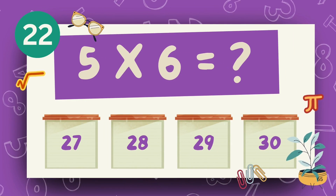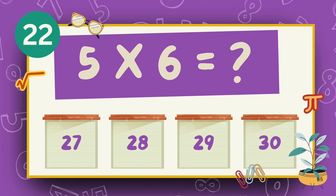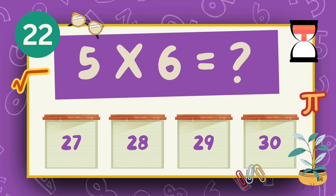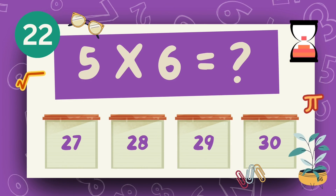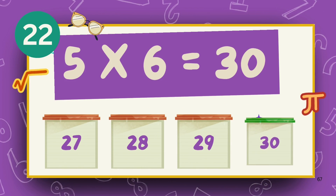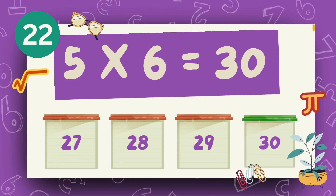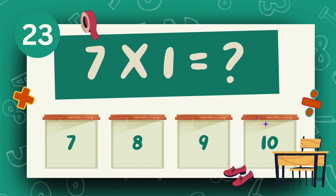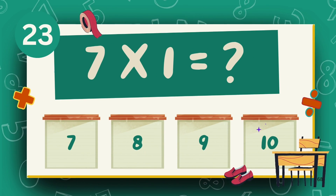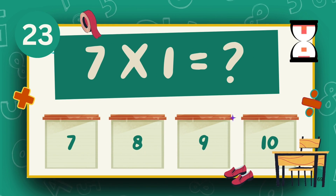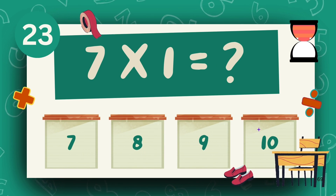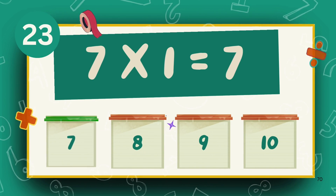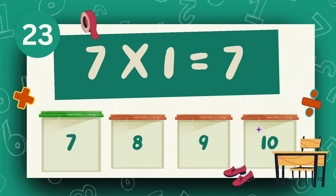What is 5 multiply 6? The answer is 30. What is 7 multiply 1? The answer is 7.